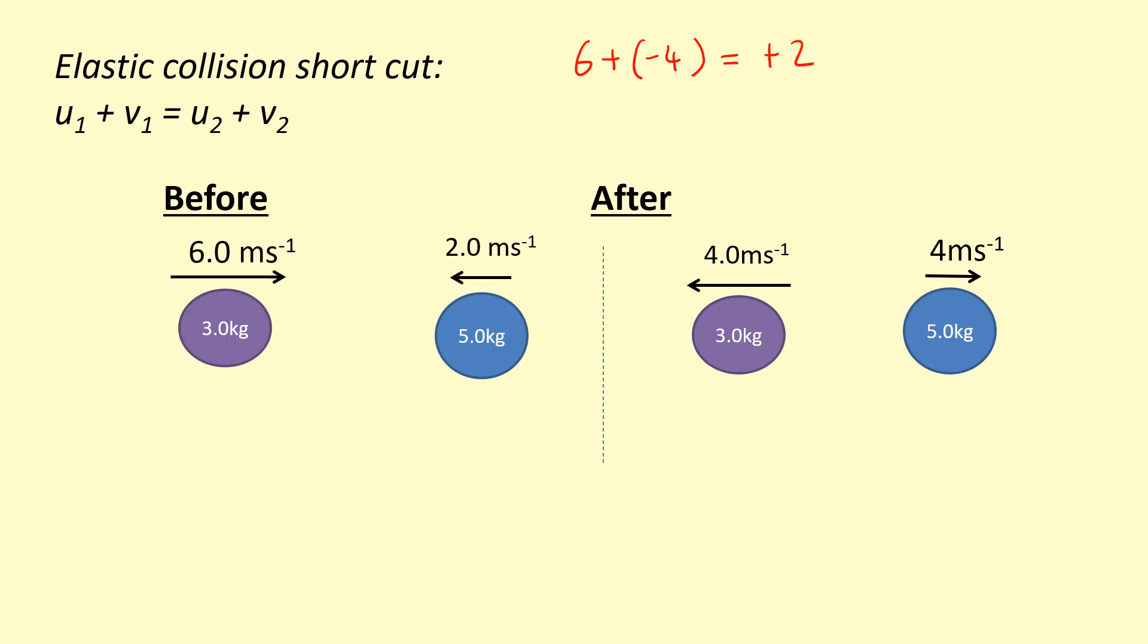Okay, let's check if this is true for particle two. The initial velocity of particle two is minus two plus the final velocity of particle two which is plus four. So that gives me again plus two as a total. So we know this collision is elastic. So we don't have to use half mv squared for each particle and then add them up to check if it's conserved. Though it's good, but this is a quick shortcut you can use.